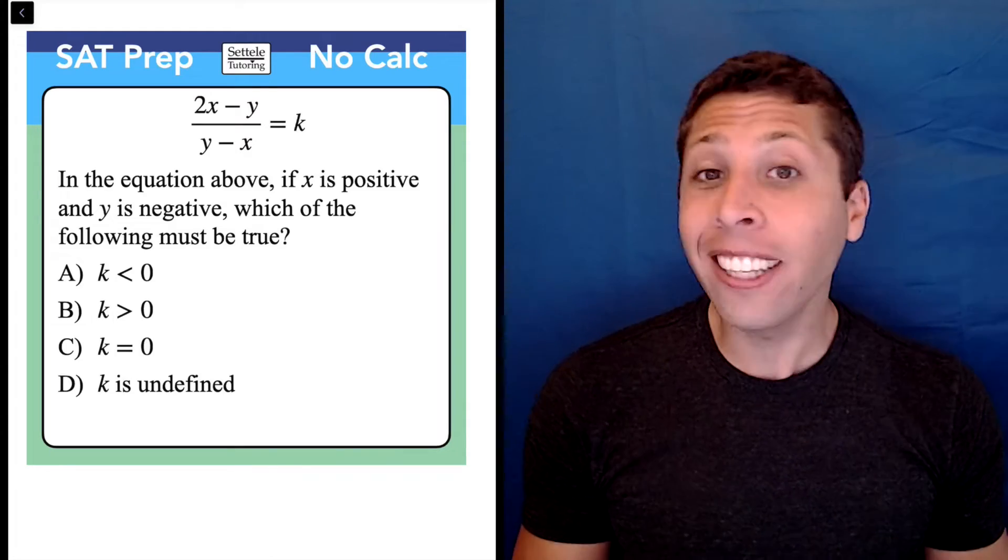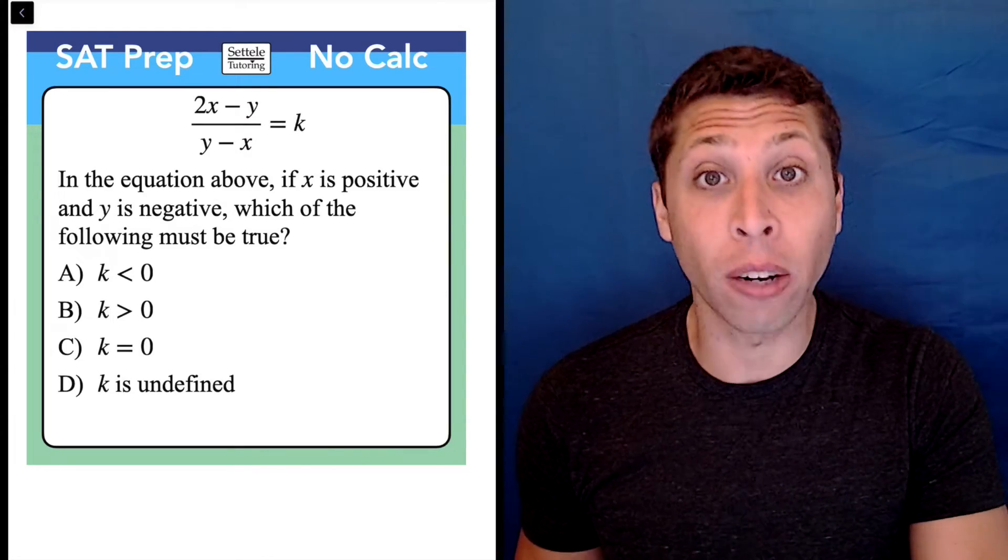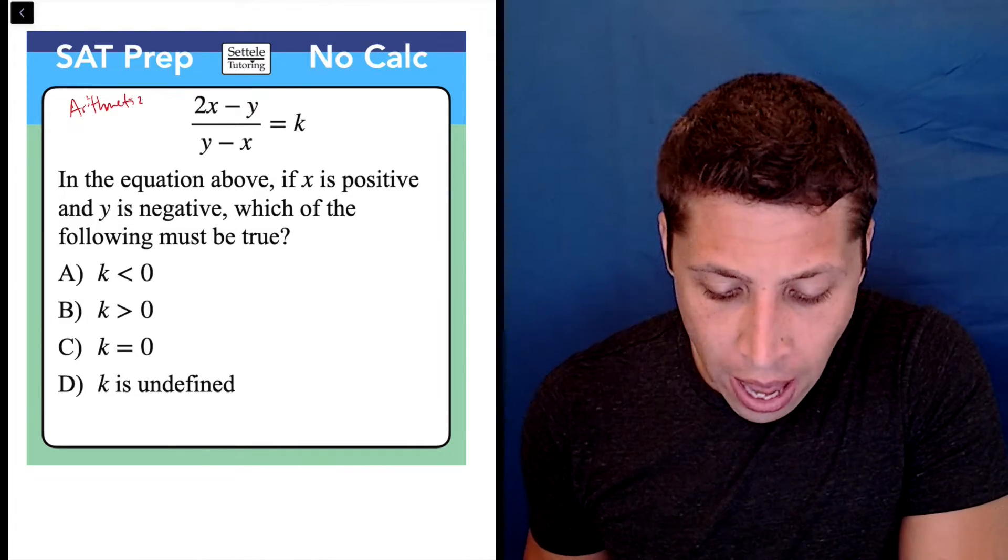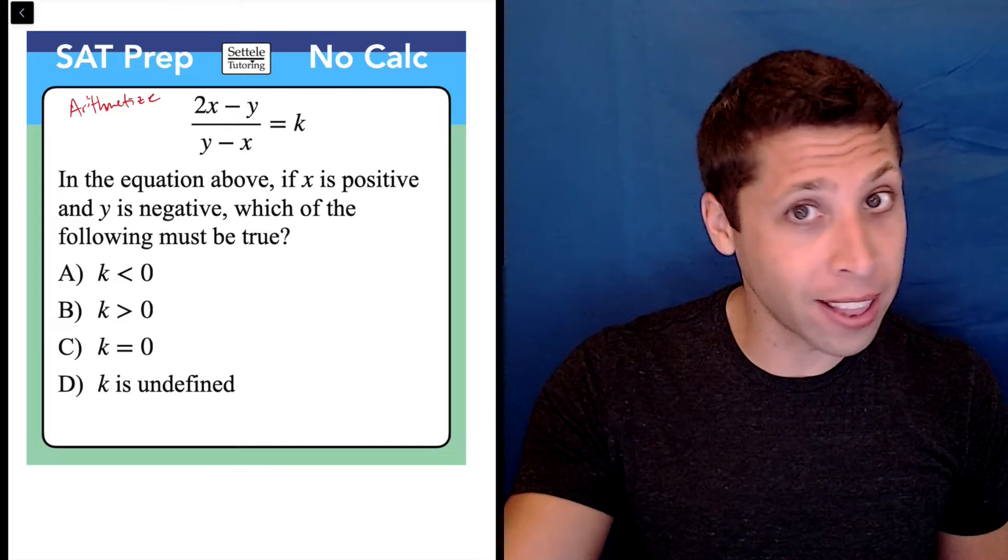For this question, your instantaneous reaction needs to be that this is a great arithmetized question. The reason is that we are given an equation with three letters: x, y, and k. That's a lot.